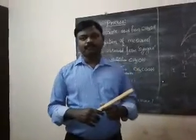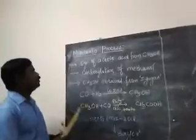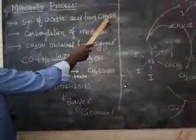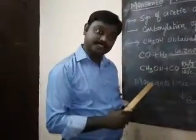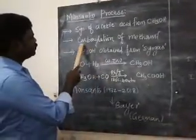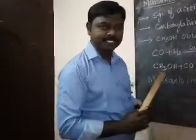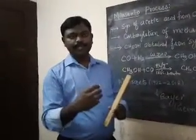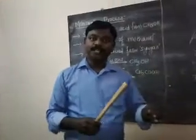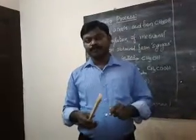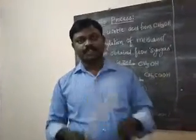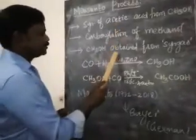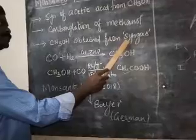With this introduction, let us go into how acetic acid is produced by the Monsanto process. The Monsanto process is the synthesis of acetic acid from methanol — methanol is the starting material. The process is also called carbonylation. Carbonylation means the addition or insertion of carbon monoxide, just as hydrogenation means addition of hydrogen, and hydroformylation means addition of hydrogen and a formyl group.